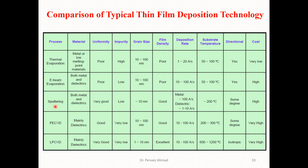For the sputtering technique, it can utilize both metals and dielectrics. Uniformity is very good. Impurity in the final product is low. Grain size can be as small as approximately 10 nanometers. Film density is good. The deposition rate for metals is approximately 100 angstroms per second, and for dielectrics it is in the range of 1 to 10 angstroms per second. Substrate temperature is approximately 200 degrees centigrade. It has some degree of directionality, but the cost of the experimental setup is very high.